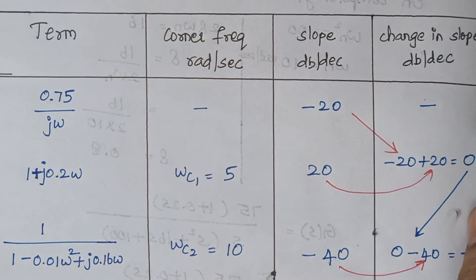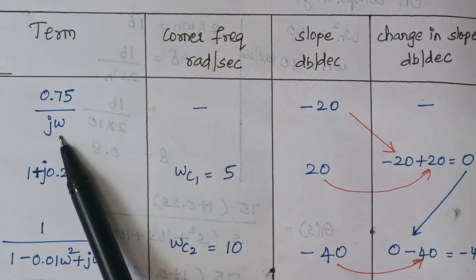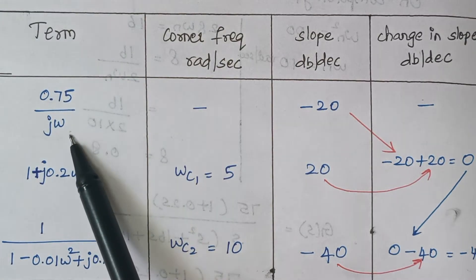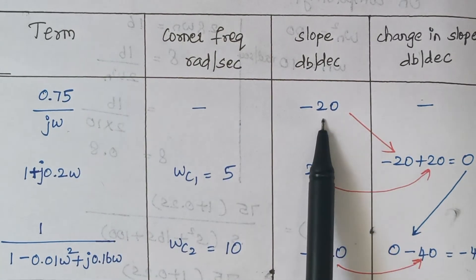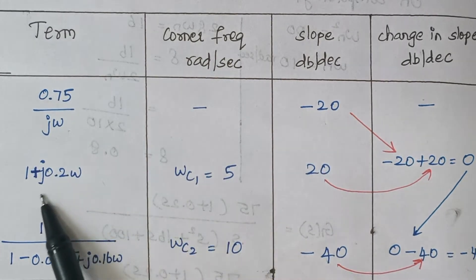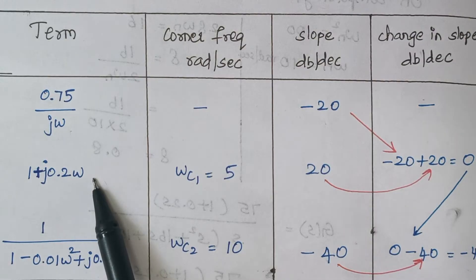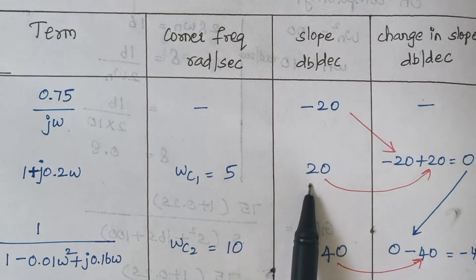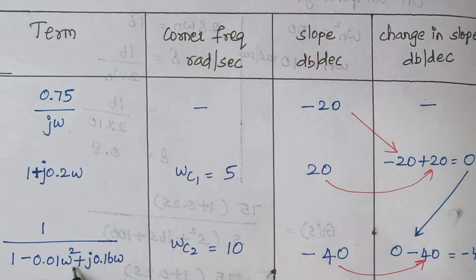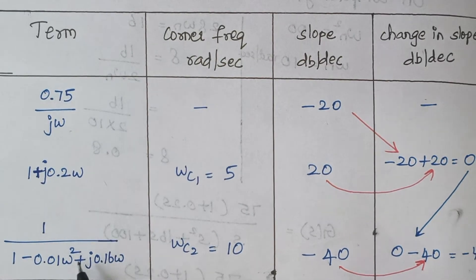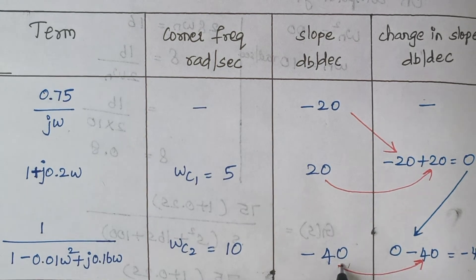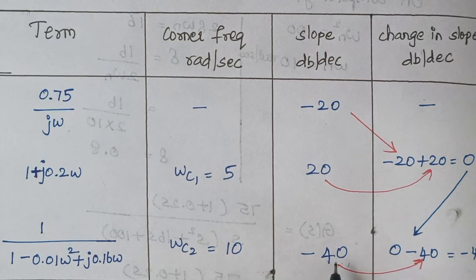To calculate the slope: ω in the denominator contributes −20 dB/decade; ω in the numerator contributes +20 dB/decade. For the quadratic in the denominator, the highest power is ω², so it contributes 40 dB/decade, and since it lies in the denominator, the slope is −40 dB/decade.